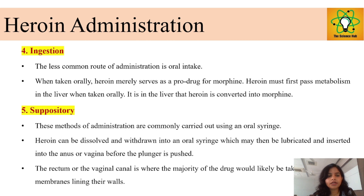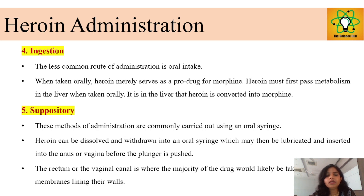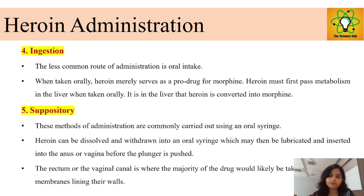Oral ingestion is a type of intake where heroin is taken directly by mouth and undergoes metabolism in the liver, where it is converted back into morphine. Suppositories are administered using oral syringes via the anal or vaginal canal, where the drug is absorbed through the membrane lining the walls.